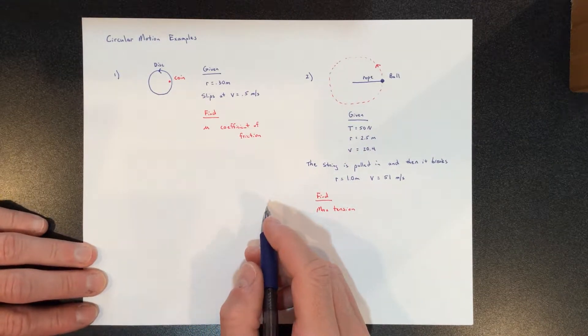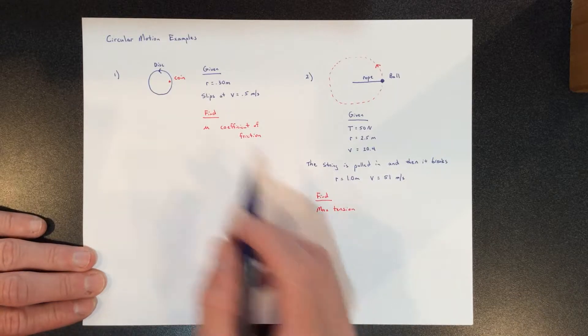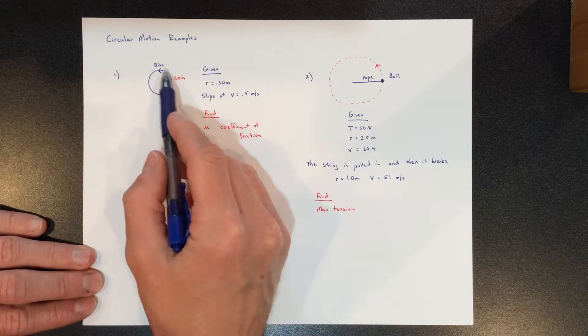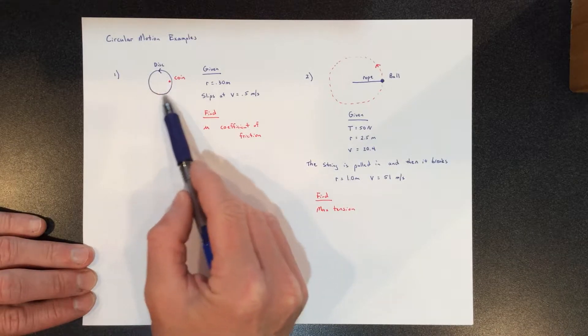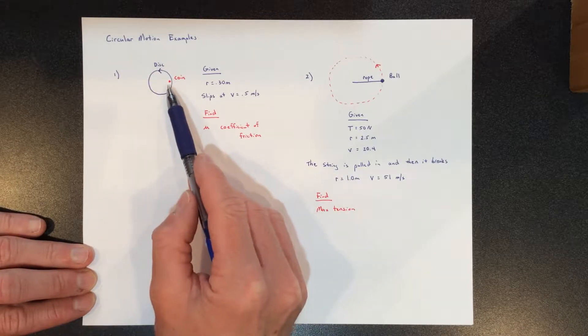Okay, let's take a look at two different circular motion examples. This first one has a coin that's sitting on some turntable, which is really just a disc, and that thing is rotating. So the coin rotates.